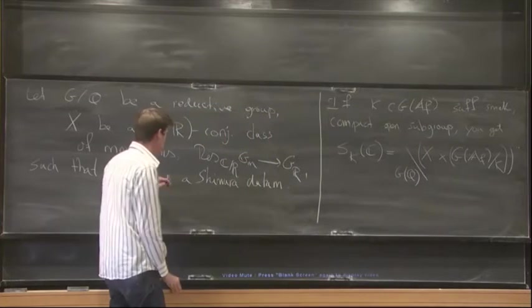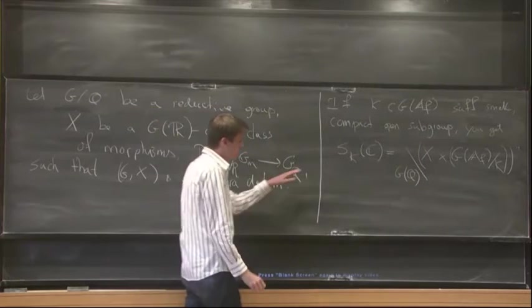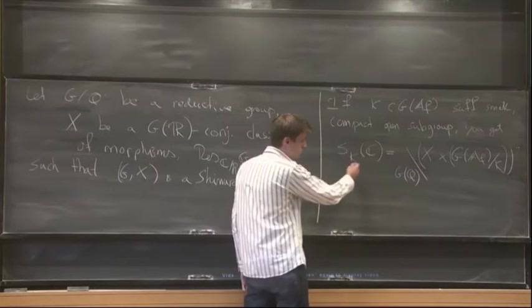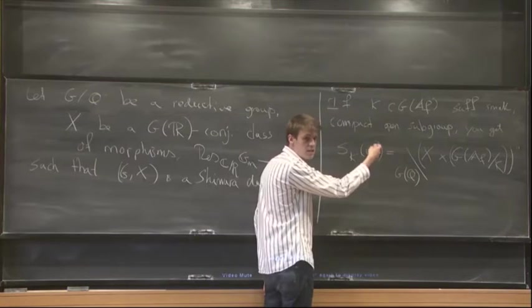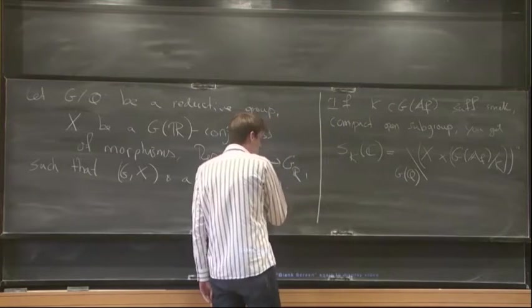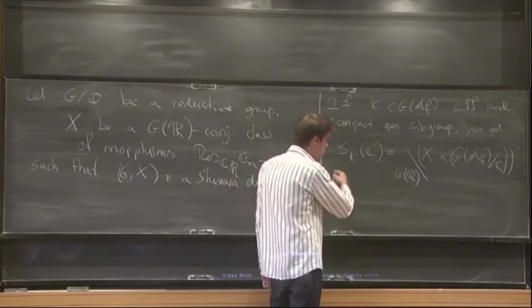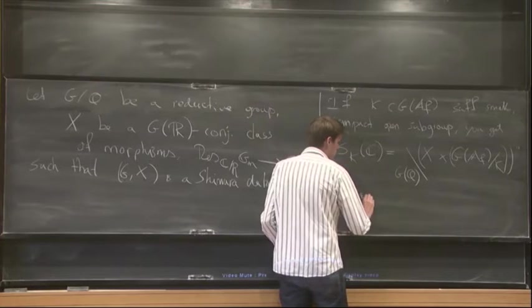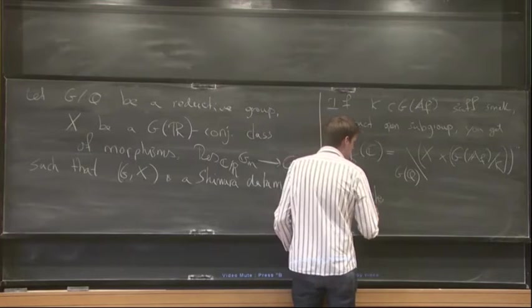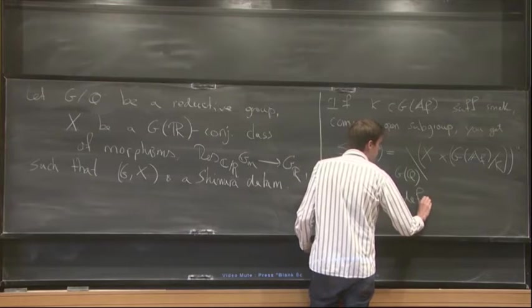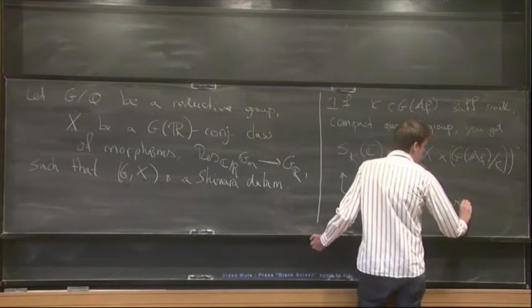And really, the point of taking a Shimura datum is that these objects are algebraic varieties. So a priori, when you write this down like this, it's just a topological space or a manifold. But the point that we take a Shimura datum gives that these things are varieties. So these are varieties defined over a number field.